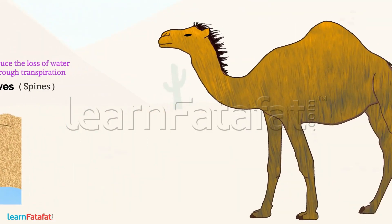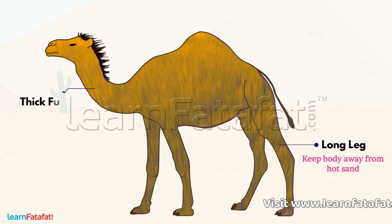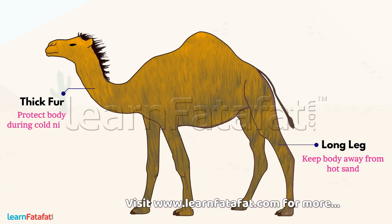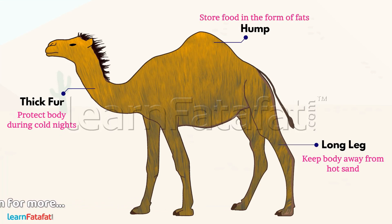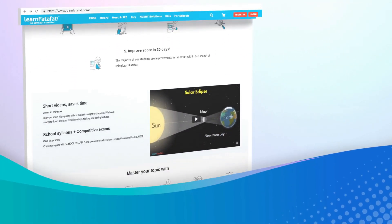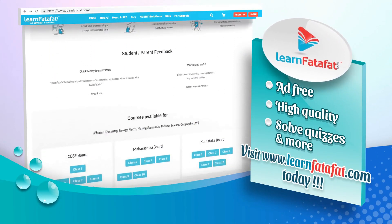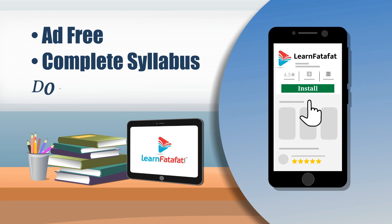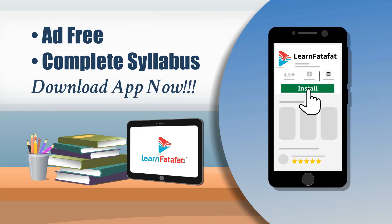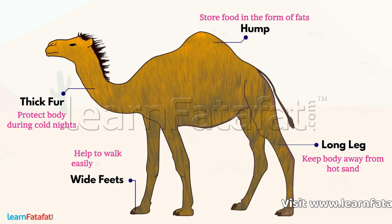Animals like the camel have long legs which keep their body away from the hot sand. They have thick fur which protects their body during cold nights. The hump on their body stores food in the form of fats, which provides them energy for a longer time. Wide feet help them to walk easily on sand.